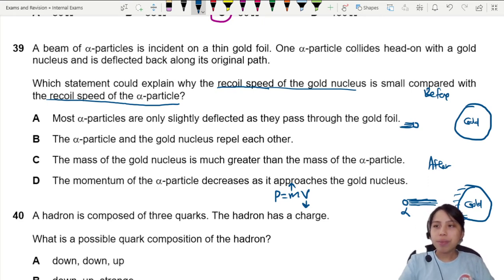Let's look at the statements though. Alpha particles are slightly deflected. Don't really explain the recoil speed though. It's a head-on collision. Slightly deflected? Doesn't really answer the question.